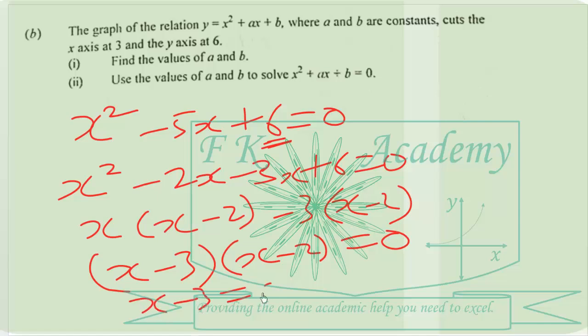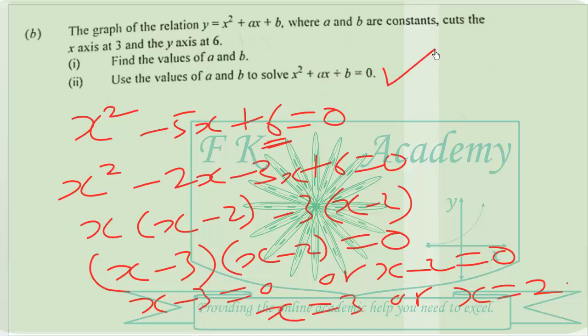Either x minus 3 equals zero or x minus 2 equals zero, which gives us x equals 3 or x equals 2. These are the values of x that satisfy this equation.